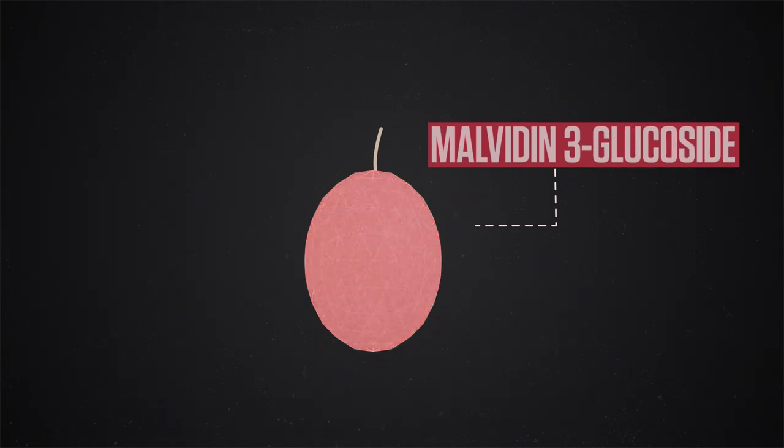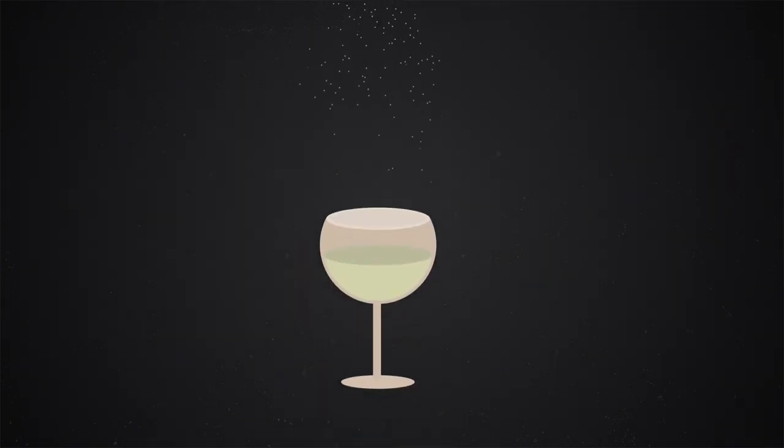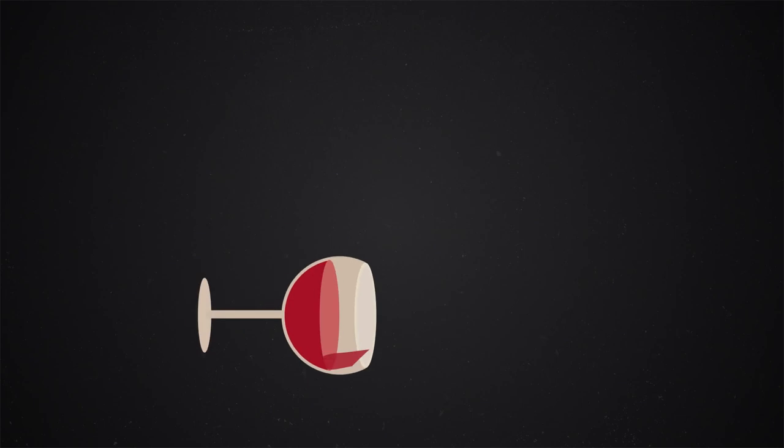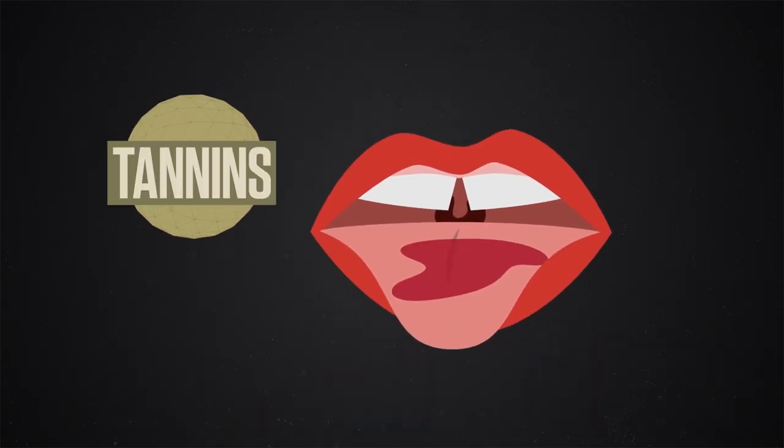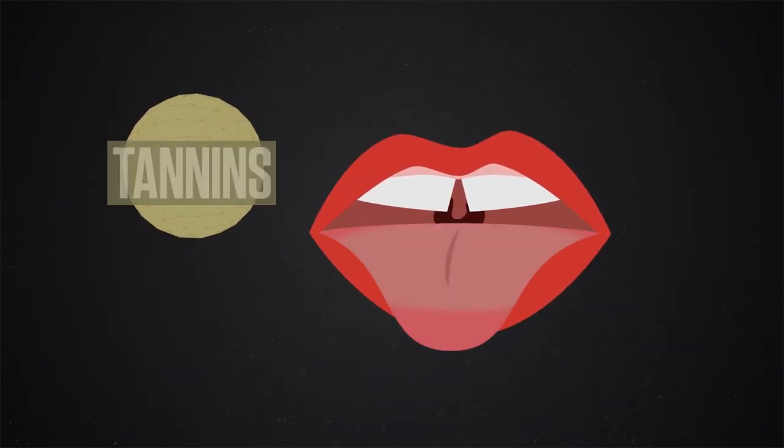Malvidin-3-glucoside, a pigment in grape skin, gives red wine its color. Tannins are astringent molecules that bind to salivary proteins and make your tongue feel dry.